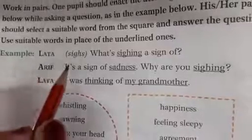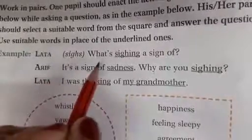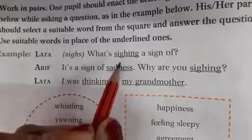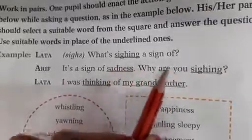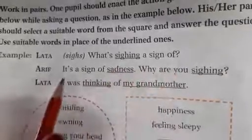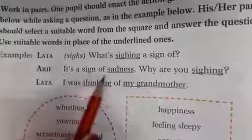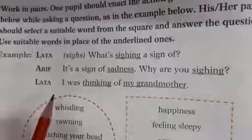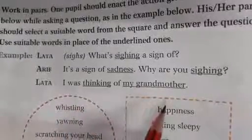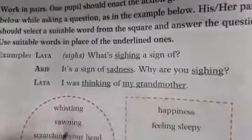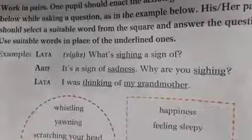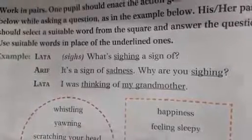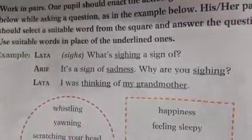Example: Lata is sighing. Sighing is a sign of sadness. Why are you sighing? Lata says: I was thinking of my grandmother. So, like this, we will use these words for the question and we will use these words for the answer.